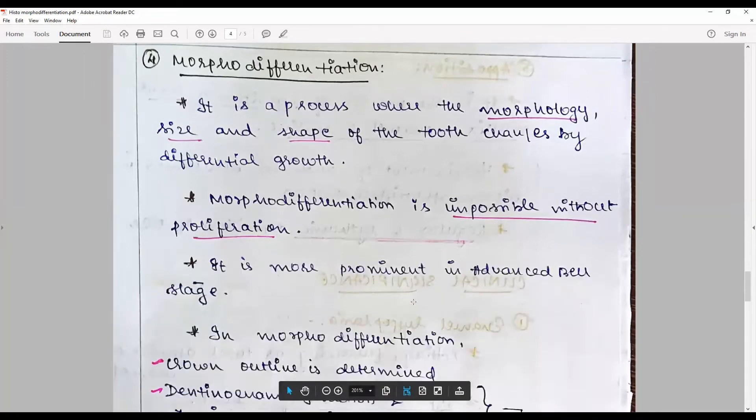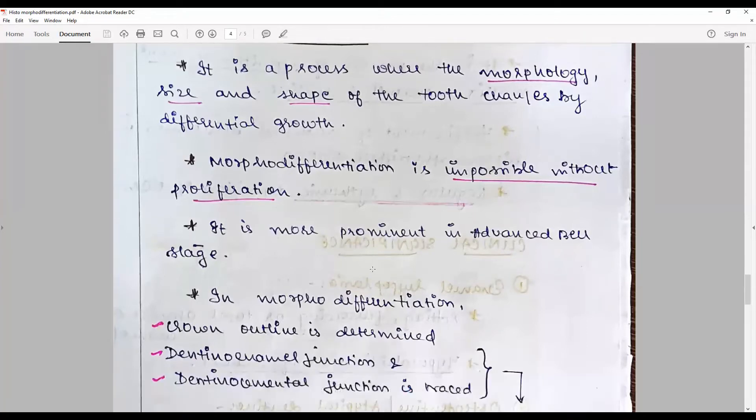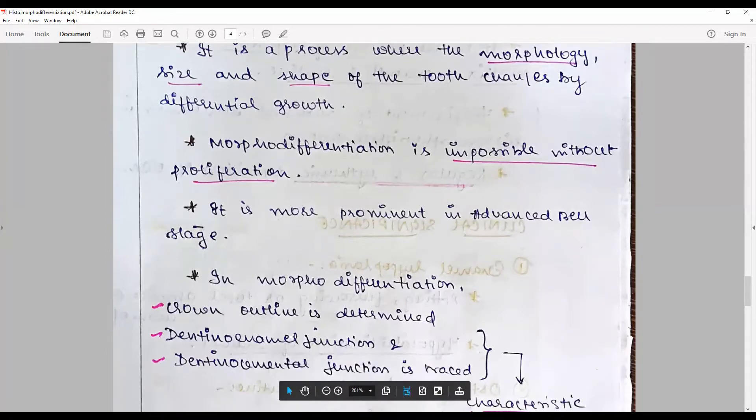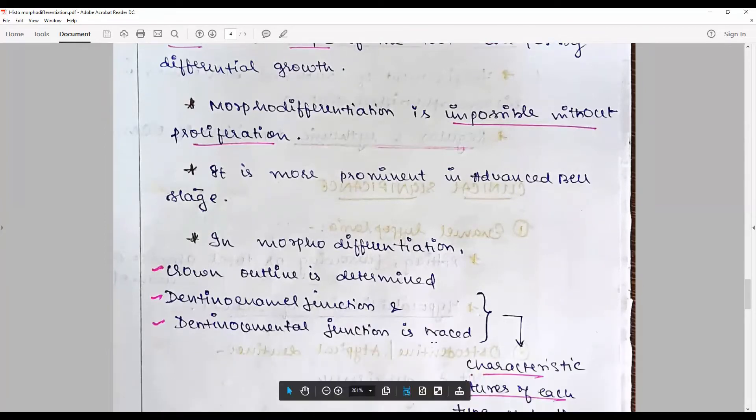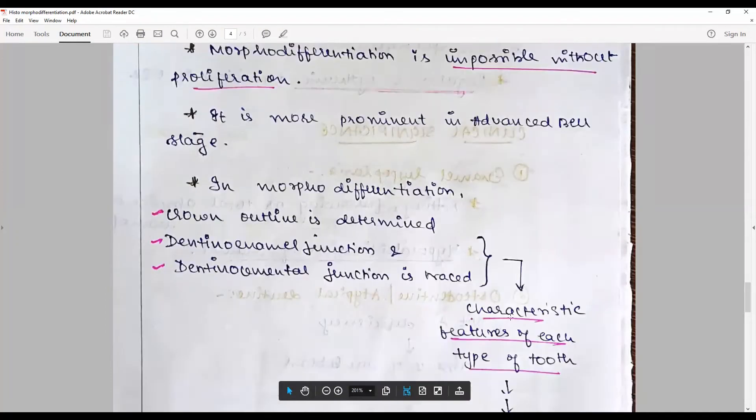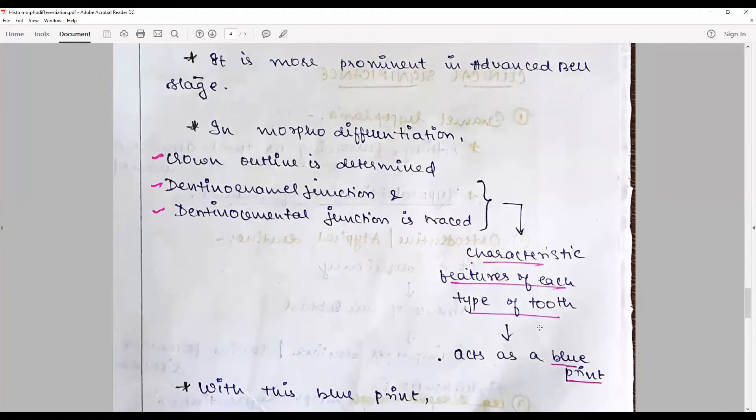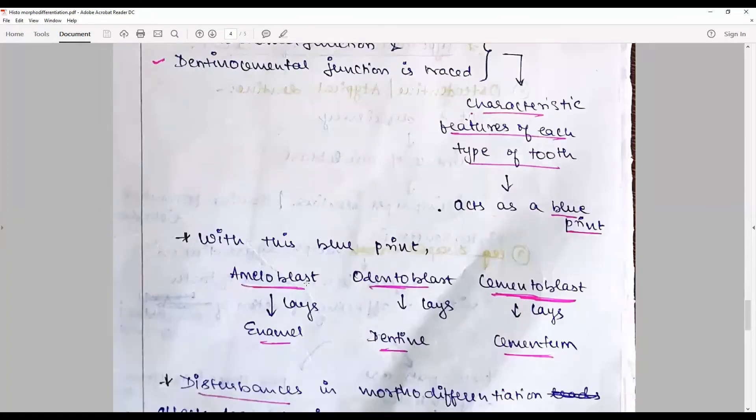Morpho-differentiation is more prominent in advanced bell stage. Crown outline is determined. Dentino-enamel junction and dentino-cemental junction are traced and laid down. This stage gives the characteristic feature of each type of tooth and is technically called a blueprint of the tooth. With this blueprint, the ameloblast subsequently lays down enamel in the shape desired. Odontoblast lays down dentine and cementoblast lays down cementum.